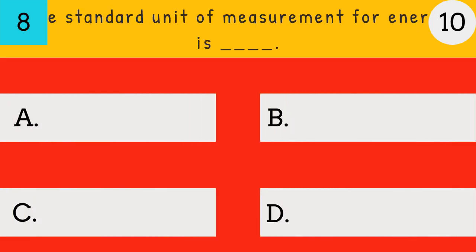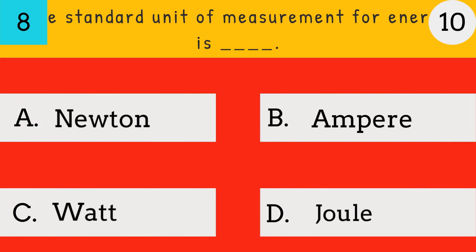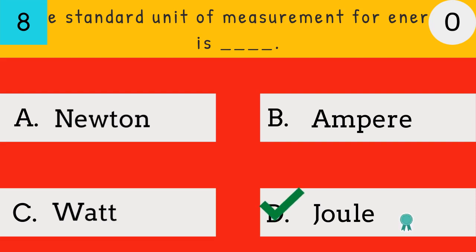The standard unit of measurement for energy is — newton, ampere, watt, or joule? The answer is joule — the standard unit of measurement for energy is joule.